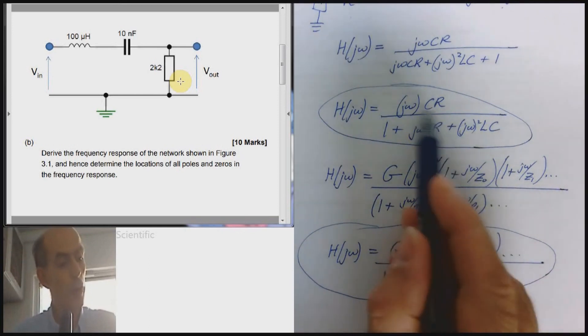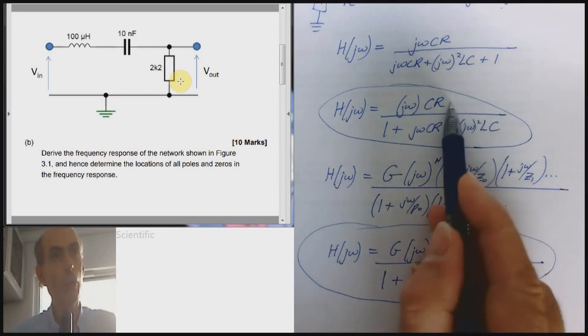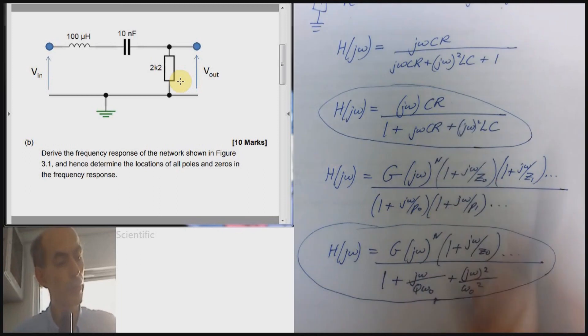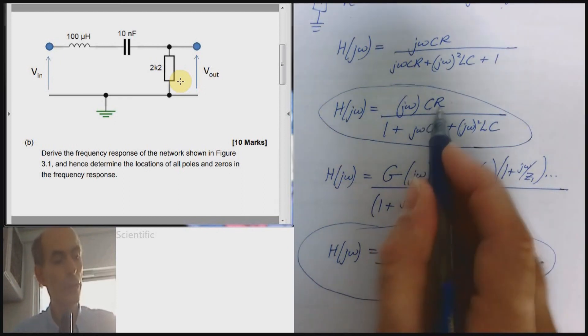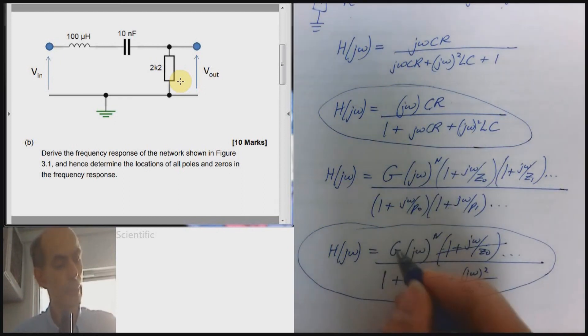There are no other zeros on the top. There's no term at the top that looks anything like this. So we have no other zeros at the top. We do have a gain, gain, gain, CR.